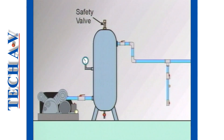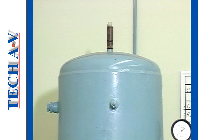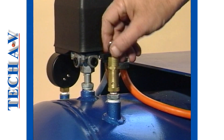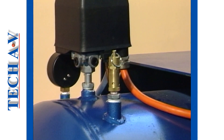All receivers must include a safety valve, sometimes called a relief valve. A safety valve is a device that prevents the internal pressure of a system from exceeding a preset value. If this occurs, then the safety valve will release pressure into the atmosphere.